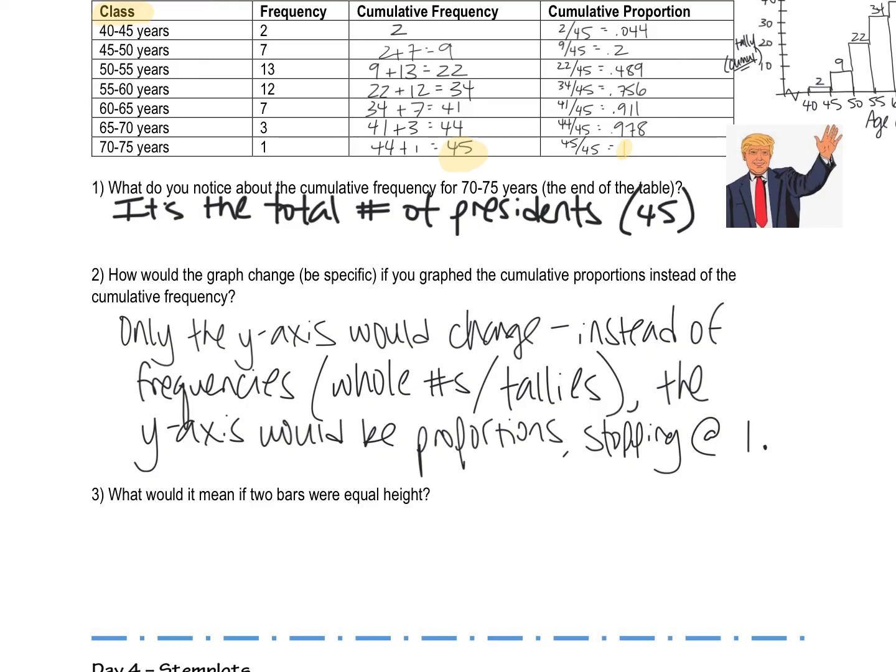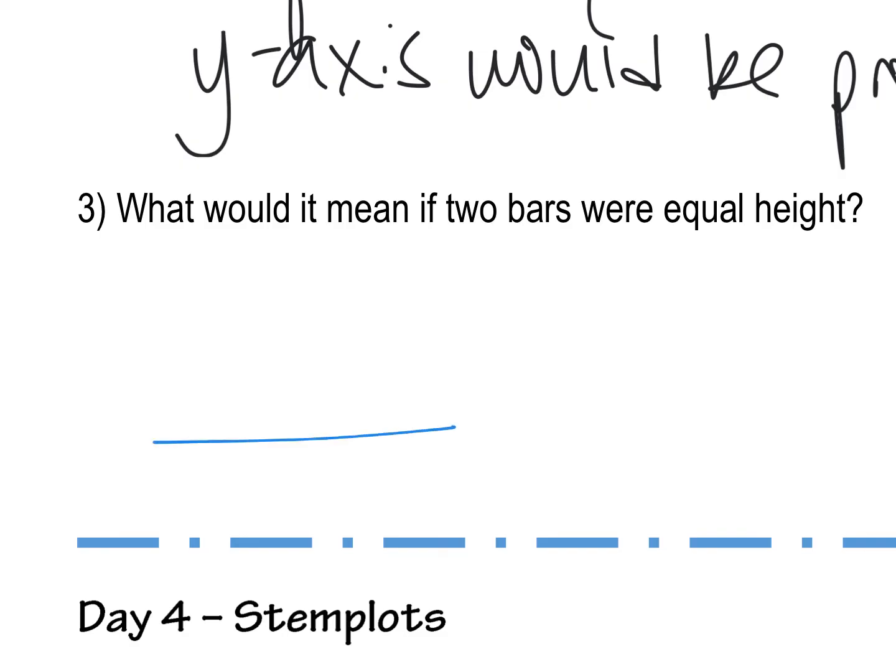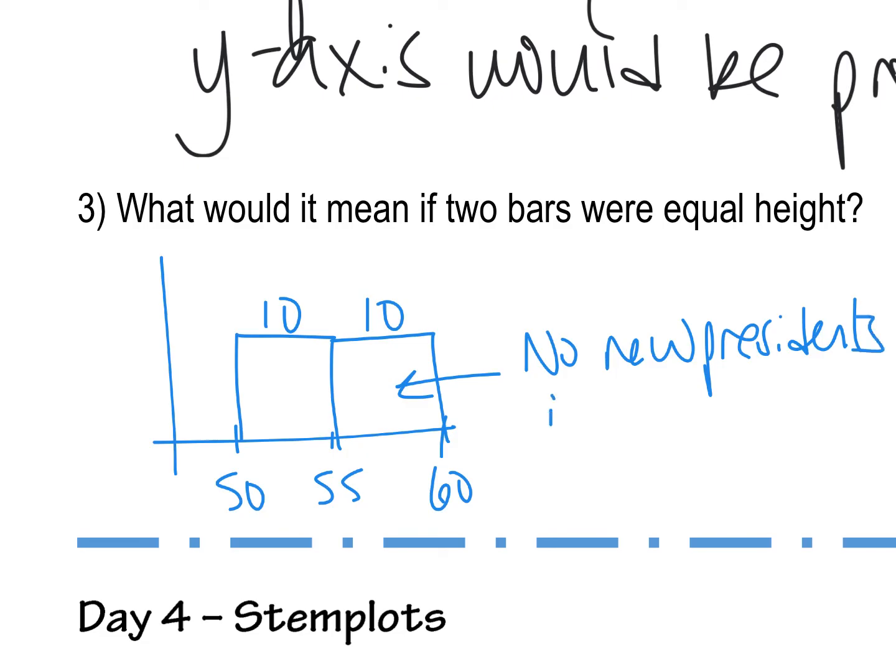Last thing is, what would it mean if two bars were equal height? What that would look like is, for example, let's just say that I went from 50 to 55 to 60, and let's say there were 10 presidents in here and there were also only 10 presidents in here. What that would mean is there were no new presidents in the 55 to 60 class. I'm using that vocab word class, to increase the cumulative frequency. So if two bars were equal height, that would mean that there were a certain number of presidents in here and the same exact number stayed here. That would mean that there were no new ones in this class to increase that tally.